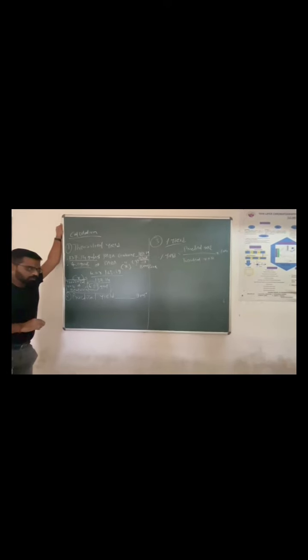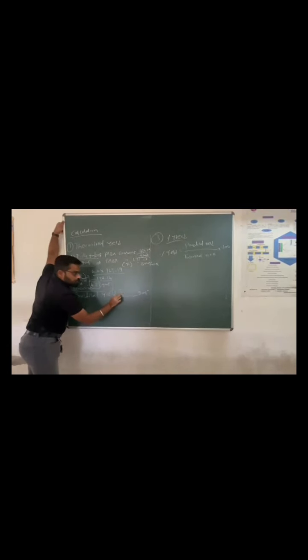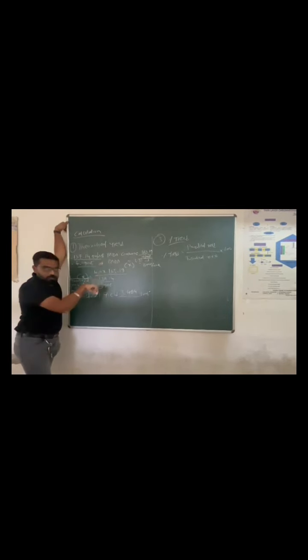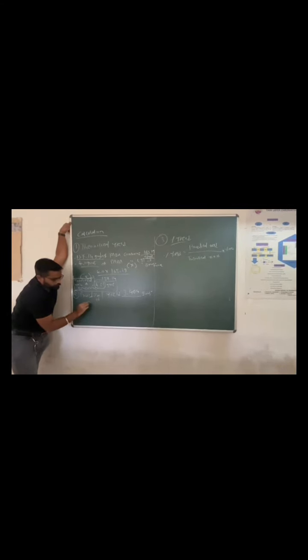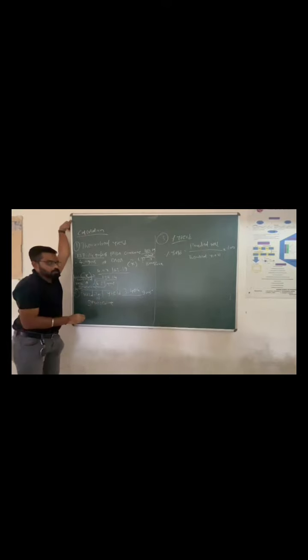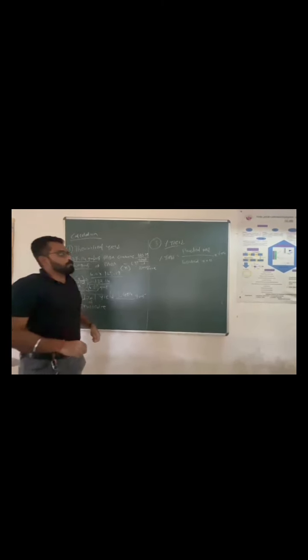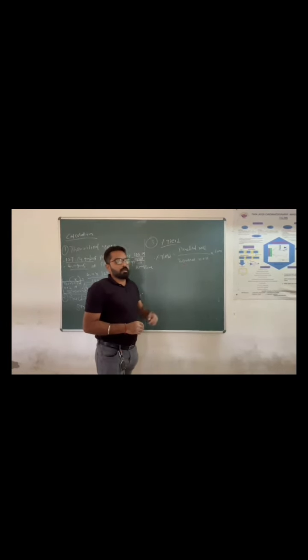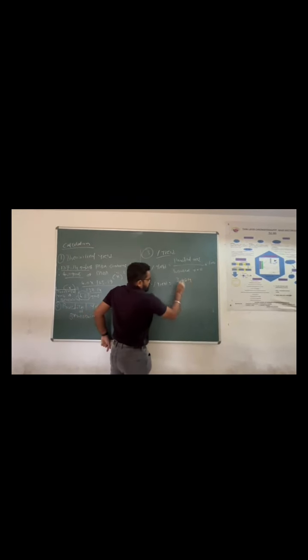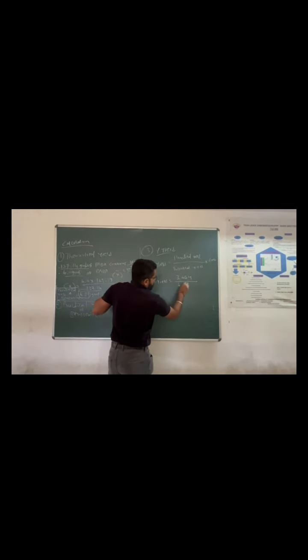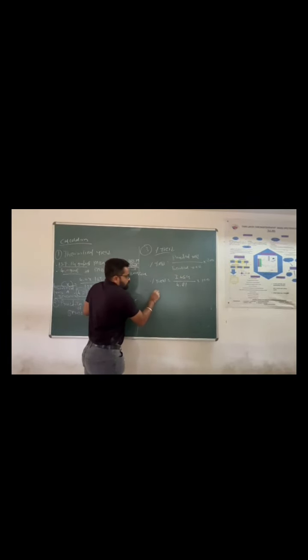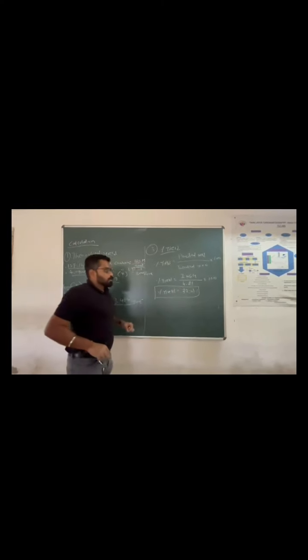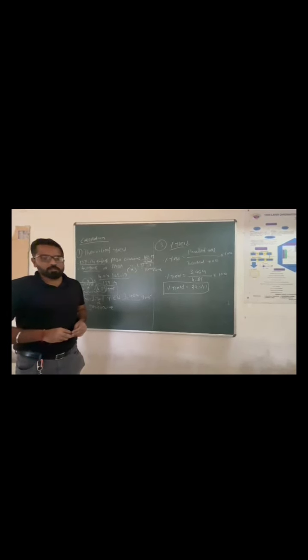Now come to the practical yield. As we have measured on the balance, that is 3.464 grams. Now come to the final step — percentage yield. Percentage yield is equal to practical yield upon theoretical yield, into 100. Our percentage yield is 72.01 percent. So we get our percentage yield of benzocaine as 72.01 percent with a practical yield of 3.464 grams.